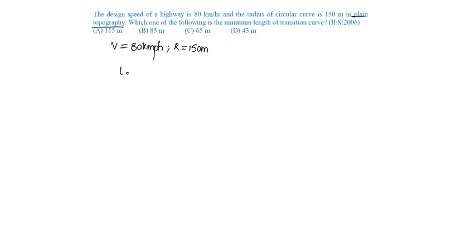the length of transition curve is 2.7v² by r, which is 2.7 × 80² ÷ 150. We get it as 115 meters.